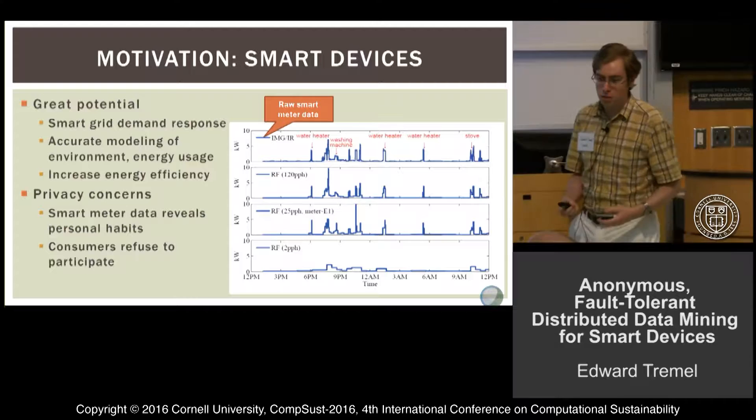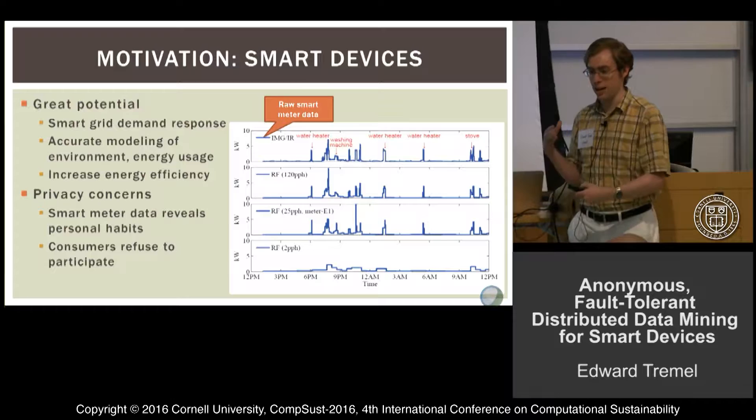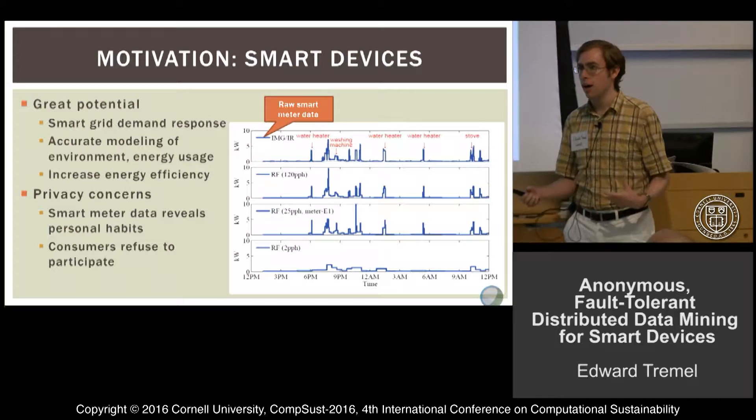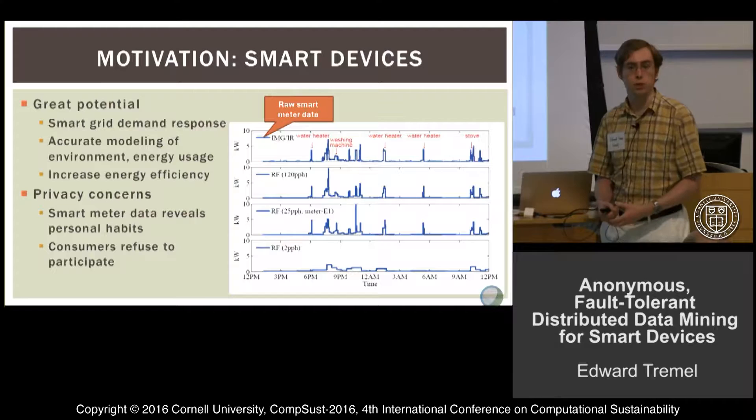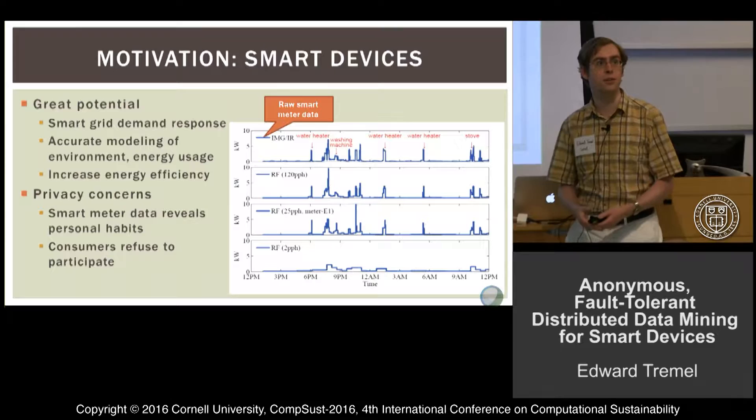The target is smart devices such as smart meters, building monitoring systems, and other kinds of embedded devices. These devices have a great potential to improve the efficiency of our power systems, our heating and cooling systems. It can greatly improve our energy efficiency and also our ability to use renewables by enabling dynamic demand response in the power grid to better match the demand to the supply when the supply varies as it does with renewable energy.